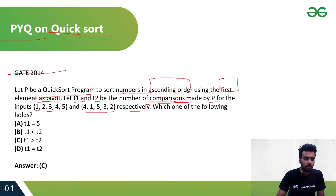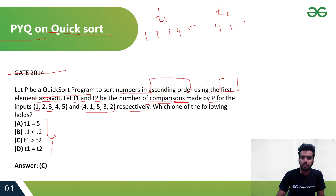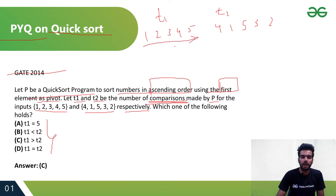We have to find the relation between t1 and t2, where t1 is the number of comparisons for the first array and t2 is the number of comparisons for the second array. We know that if the array is already in sorted order it will take greater time. Now to find the comparisons, it is taking the first element as the pivot element.